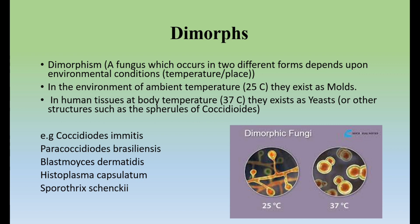The fourth category is dimorphic fungi. Dimorphism refers to a fungus that occurs in two different forms depending on environmental conditions such as temperature. At ambient room temperature of 25 degrees Celsius they exist as molds, and at body temperature of 37 degrees Celsius in human tissues they exist as yeast form. There is one exception: in Coccidioides species they exist as spherules, not as yeast form. Examples of dimorphic fungi are Coccidioides immitis, Paracoccidioides, Blastomyces, Histoplasma, and Sporothrix.